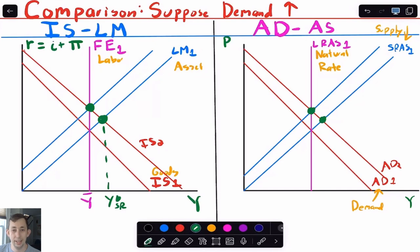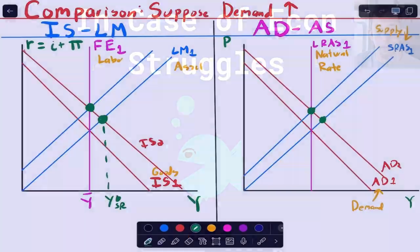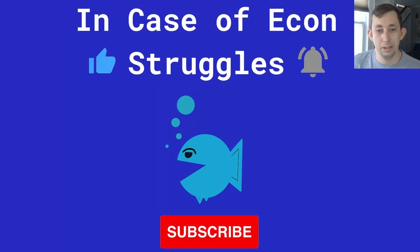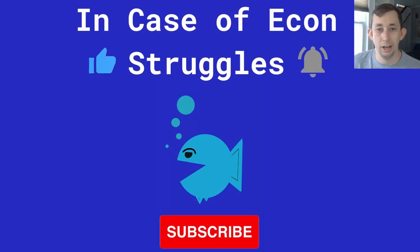AD-AS really comes from IS-LM. Hopefully this helps you understand exactly how that model works. If you've got questions or want to see a different shifting of the aggregate demand and aggregate supply curve, let me know in the comments. If these videos are helping you out, please like and subscribe, and we'll see you next time for another case of econ struggles.